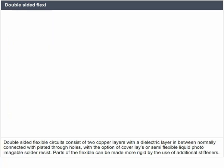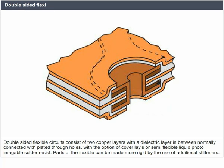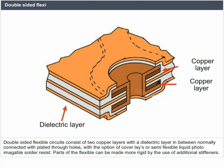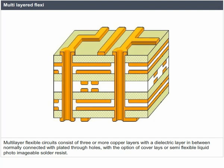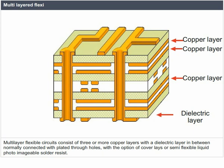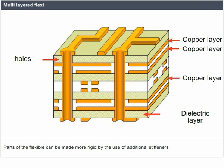Double-sided flexi: double-sided flexible circuits consist of two copper layers with the dielectric layer in between, normally connected with plated through holes, with the option of cover layers or semi-flexible liquid photo-imageable solder resist. Multi-layered flexi: multi-layer flexible circuits consist of three or more copper layers with the dielectric layer in between, normally connected with plated through holes. Parts of the flexible circuits can be made more rigid by the use of additional stiffeners.